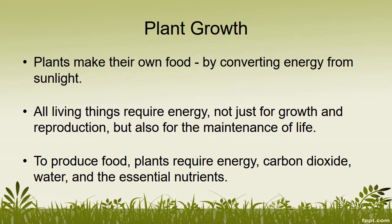Plants are able to make their own food and energy by converting energy from sunlight, and by utilizing chlorophyll, which is located in the chloroplasts inside of plant cells, and carbon dioxide and water. All living things require energy for growth and reproduction and also for the maintenance of life. So what plants do is they generate their own food source, and they use part of it in the process of growing, becoming larger, and just through normal plant maintenance.